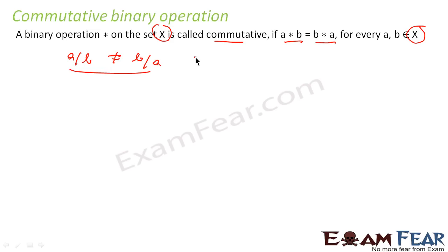But when I say a plus b, this is equal to b plus a, so addition operation is commutative. Similarly, subtraction is not commutative - a minus b is not equal to b minus a.